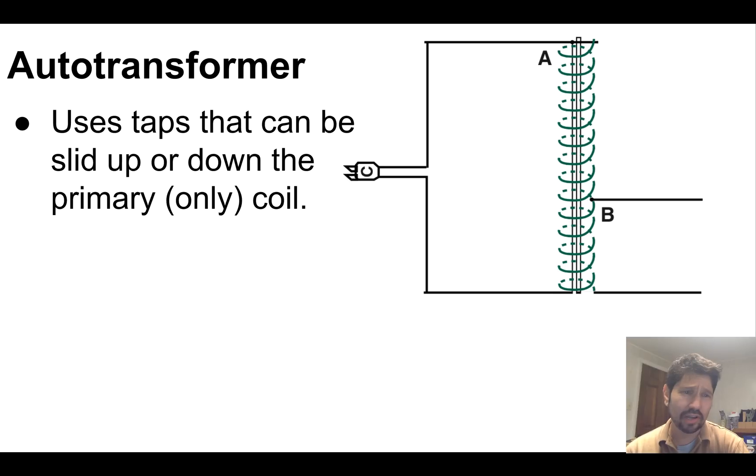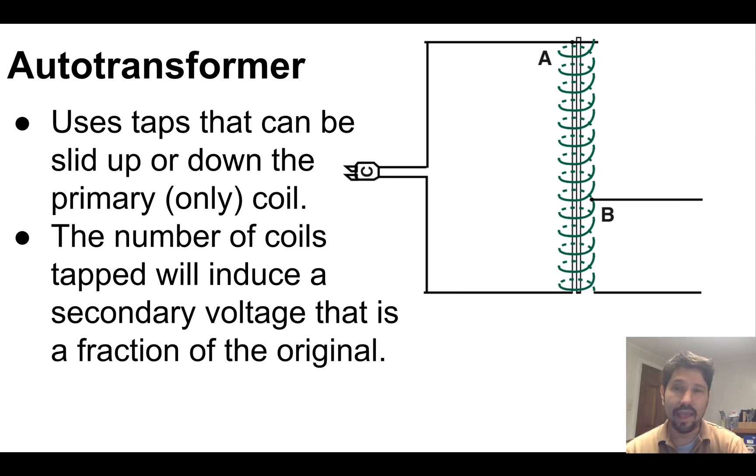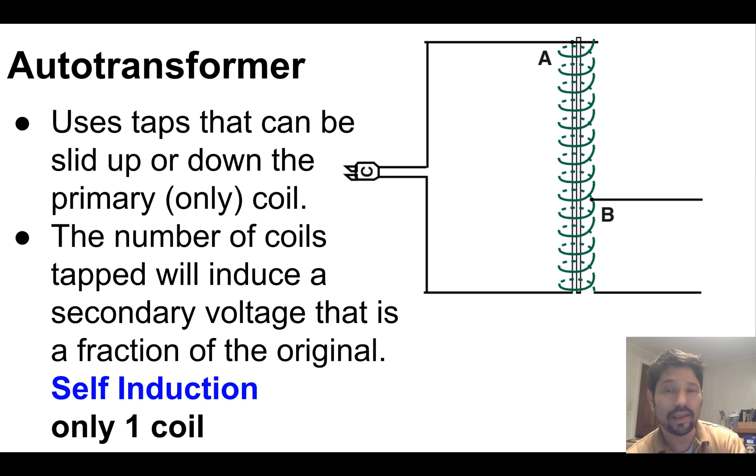The auto transformer uses a tap that can be slid up or down the primary coil, and the number of coils on the tap side on B will induce that secondary voltage which will be a fraction of the number of coils in A. This is called self induction and it's only got one coil, while the step-up and step-down transformers use mutual induction and they have two coils and that iron core.